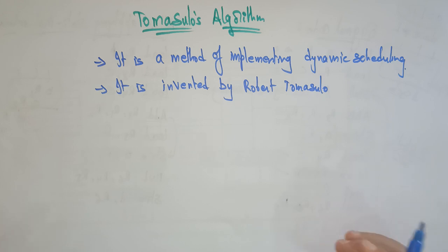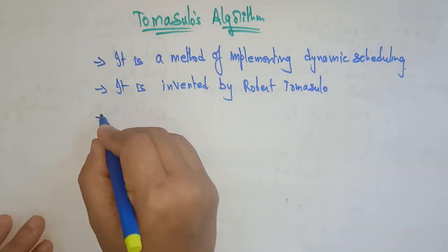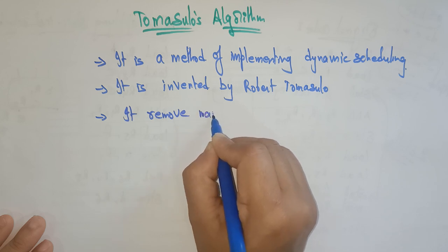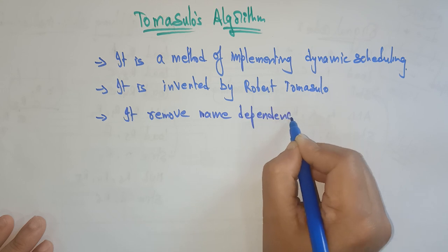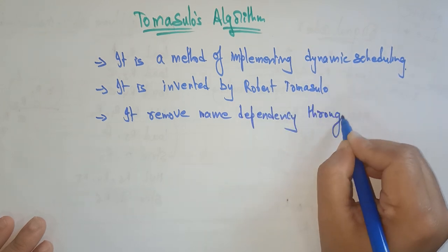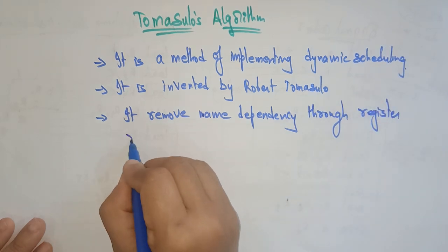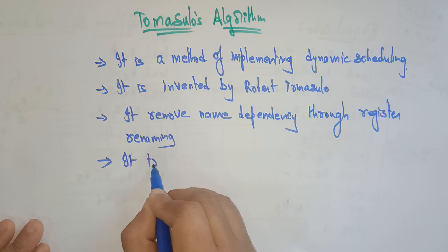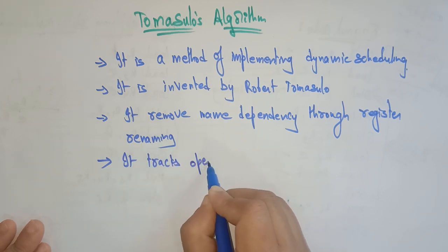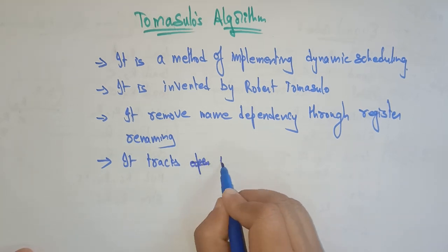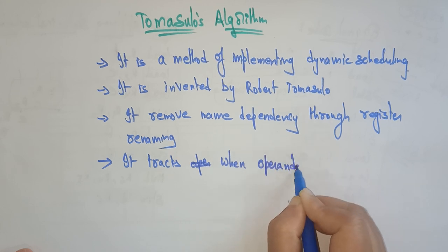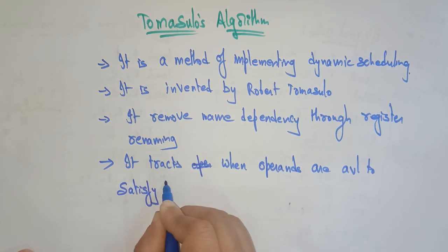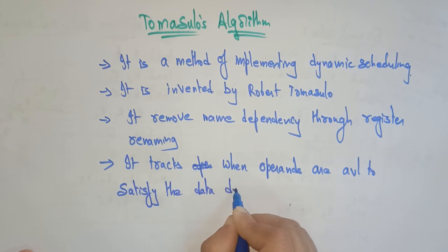What exactly does it do? It removes name dependencies through register renaming. It also tracks when operands are available to satisfy the data dependency.